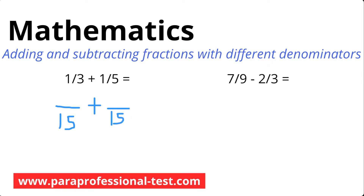Before I write the numerators, one thing to keep in mind is that whatever you do to the bottom, you've got to do to the top. We multiplied 3 by 5 to get 15, so we need to multiply the numerator — which is 1 — by 5, giving us a new numerator of 5. We also multiplied 5 by 3 to get 15, so we multiply the numerator — which is 1 — by 3, giving us a new numerator of 3.